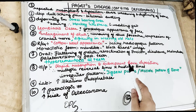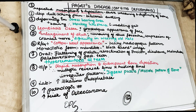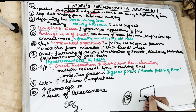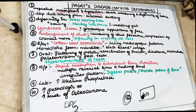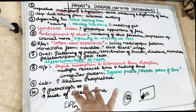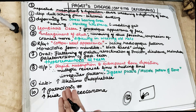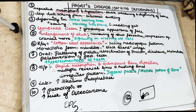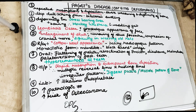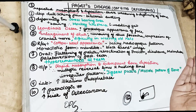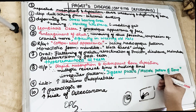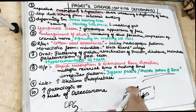Histopathologically, we see rapid resorption followed immediately by bone deposition in the same area, producing multiple reversal lines and resting lines. This irregular pattern of reversal and resting lines produces a jigsaw puzzle or mosaic pattern of the bone. The affected bone becomes thin and sclerosed, and the medullary cavity becomes obliterated. It is very important to remember that the mosaic bone pattern or jigsaw pattern is seen in Paget's disease.